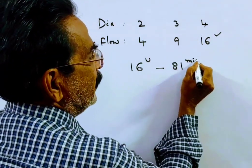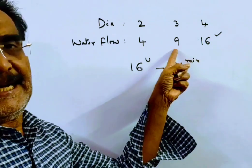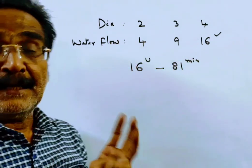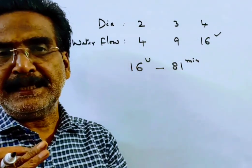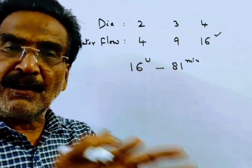Friends, if all the three pipes are opened, 16 plus 9, 25 plus 4, 29. If all the three pipes are opened, 29 units of water will be flowing.